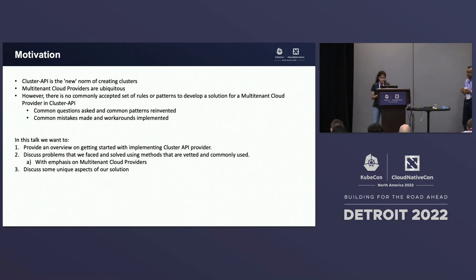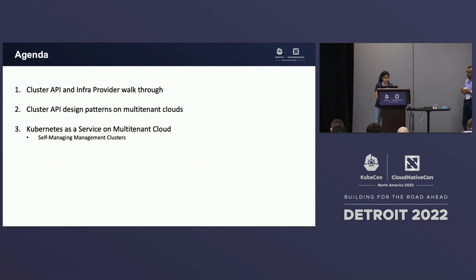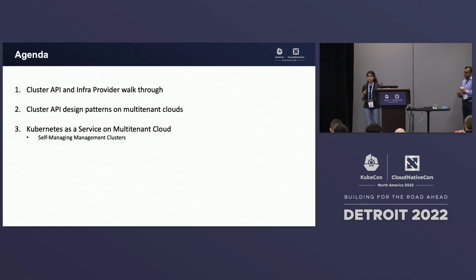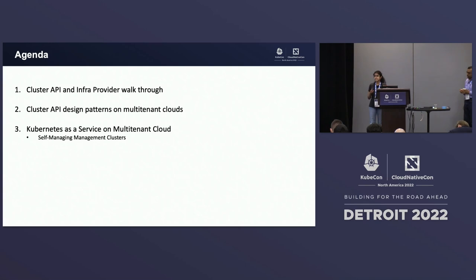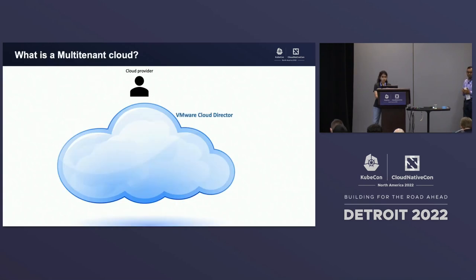We will also be talking about a few of the challenges we have faced along the way, lessons learned and discoveries made around problems one could see in their environments, and design patterns around Cluster API usage in a multi-tenant cloud platform. Lastly, we'll cover how we built Kubernetes as a service layer with the underlying technology of Cluster API. With that, let's get started. The agenda for the first half of the talk covers Cluster API internals and resources on how to get started with implementation. For the second half, Arun will cover design patterns around Cluster API usage in a multi-tenant cloud environment, and we'll finish with Kubernetes as a service on multi-tenant cloud.